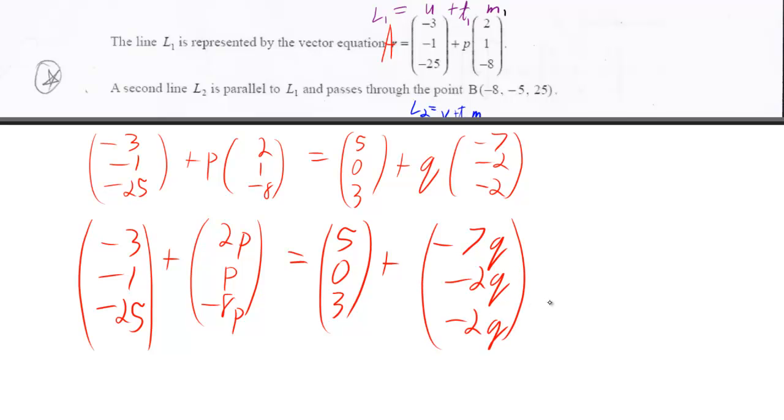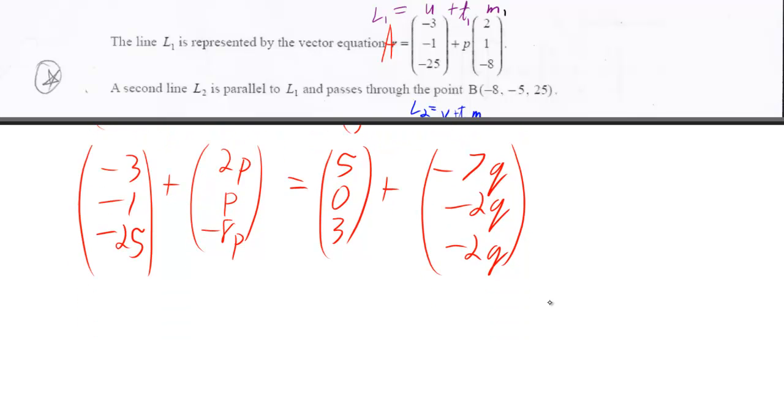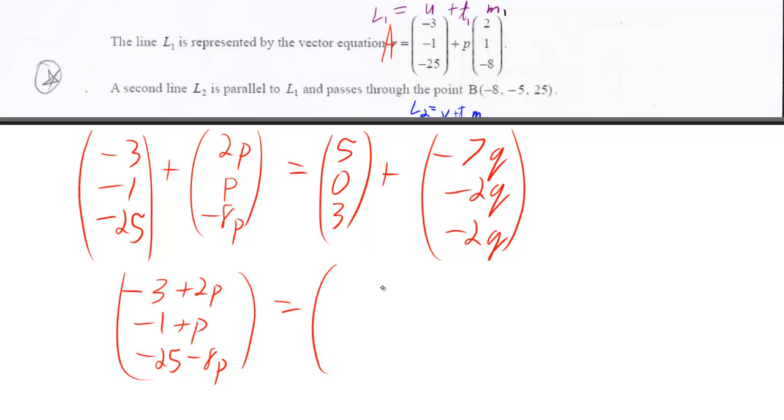Okay, and if we want these to be equal to each other, then we can keep going, and we can add up these two vectors and get negative 3 plus 2P, negative 1 plus P, negative 25 minus 8P.